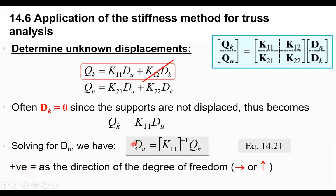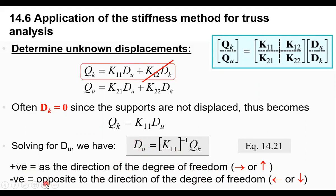If you have a positive value of D-unknown, the displacement is in the same direction as the assumed positive direction — meaning right or up. If you have a negative value, the displacement is opposite to the degree of freedom direction. So a negative displacement in X means going left, and a negative displacement in Y means going downward.